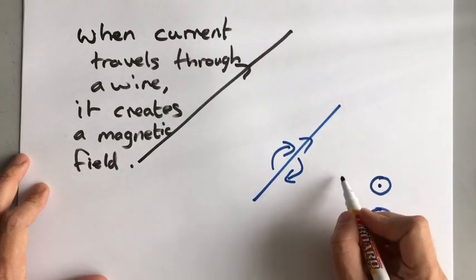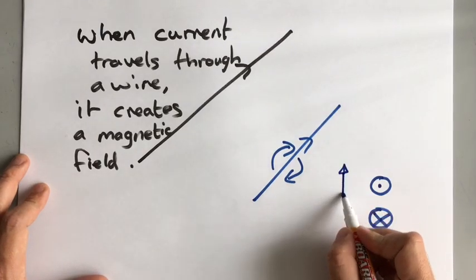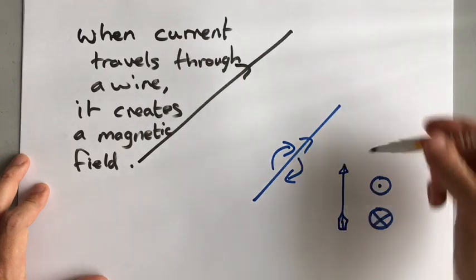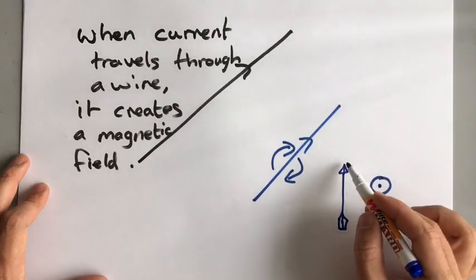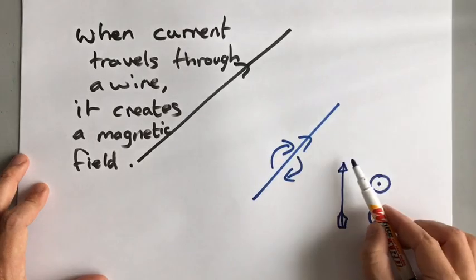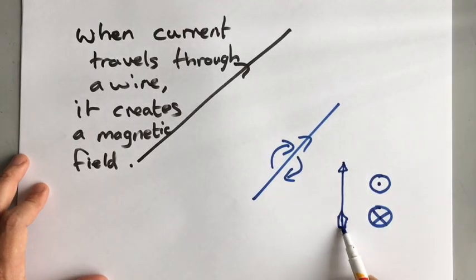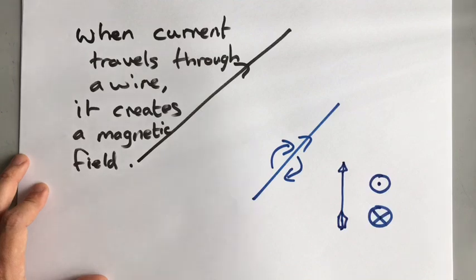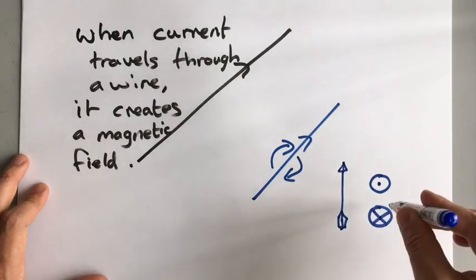A useful way of remembering that is to imagine an arrow — the current is an arrow fired by a bow and arrow. If you looked at the front end, all you'd see is one dot. If you put a piece of paper just touching there, the only thing that would touch is one dot. The tail end of the arrow on paper would show a cross. So a dot on a cross section of a wire means the current is coming out of the page, and a cross means the current is going into the page.